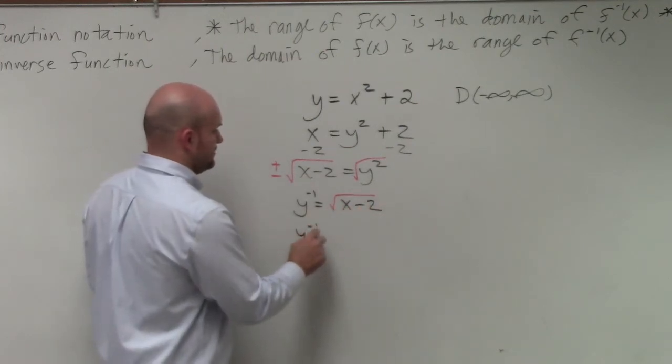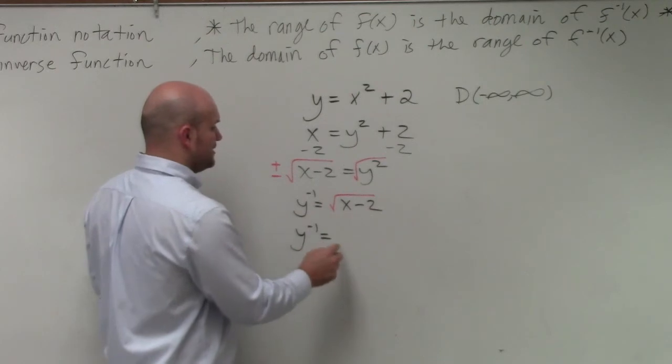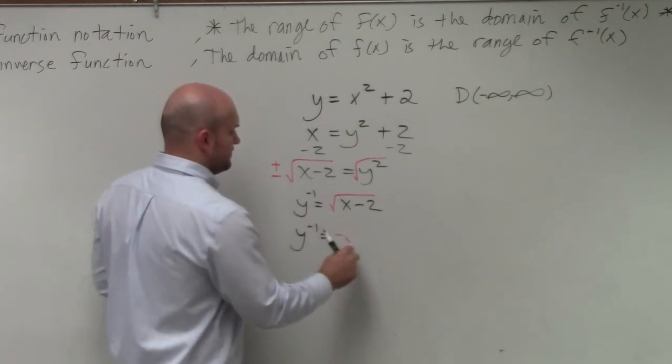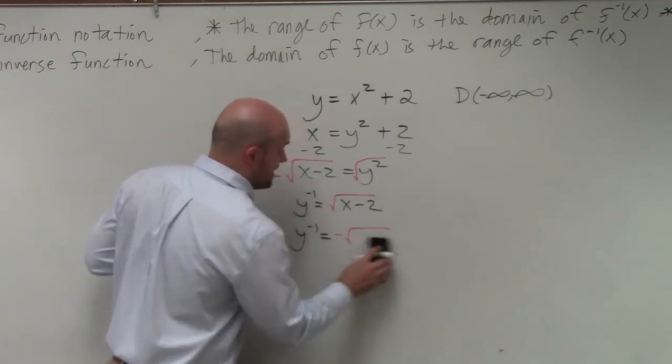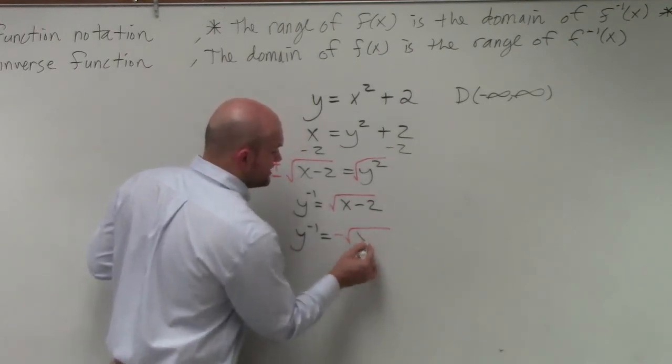So square root of x minus 2, or we could say y inverse equals negative square root of x minus 2. So there's two of them, which is very important for us to understand here.